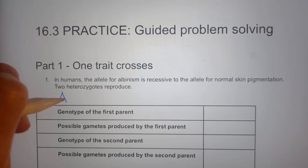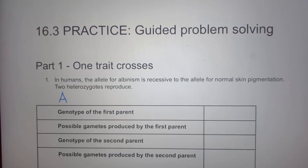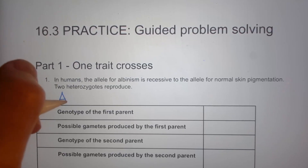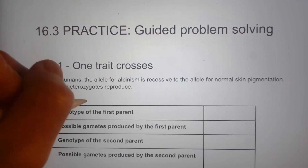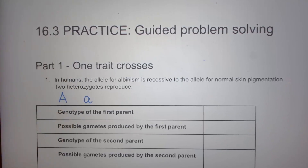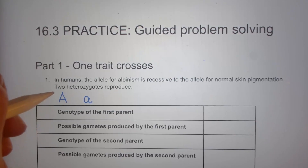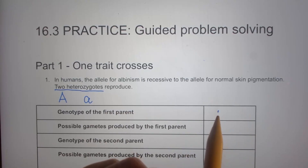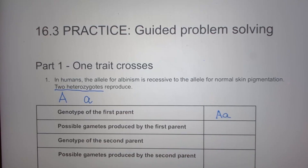Capital A will be the dominant allele for normal skin pigmentation, and lowercase a will be the recessive allele — the allele for those who cannot produce normal pigments. The first parent, being heterozygous, is written as capital A lowercase a.